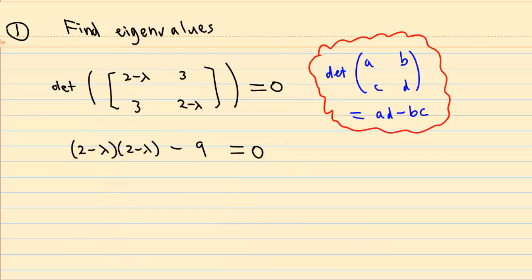But we recall that determinant of ABCD is AD minus BC. So we have 2 minus lambda times 2 minus lambda minus 3 times 3 equal to 0.